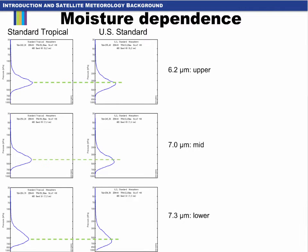This is another perspective on the weighting function profile dependence on moisture. In the left column, we have the weighting function profile for the standard tropical atmospheric profile for the three ABI water vapor bands, and in the right column, we have the weighting function profile for the US standard atmospheric profile. The total precipitable water is about three times greater in the standard tropical profile compared to the US standard profile. We would expect the weighting function profile to peak higher in altitude, thus having colder brightness temperatures for the profile with greater moisture, and that is indeed what we observe. The dashed green reference line indicates the peak weighting function value for the standard tropical profile. Not only is the peak weighting function value higher in altitude than the US standard profile, but the entire profile is shifted to a higher altitude and thus colder brightness temperatures.